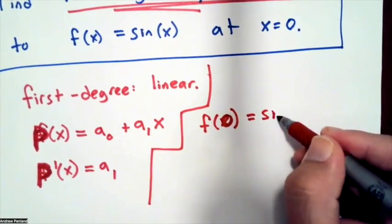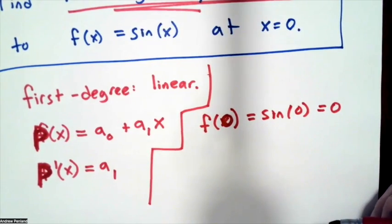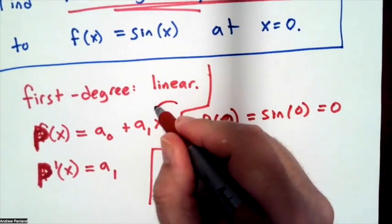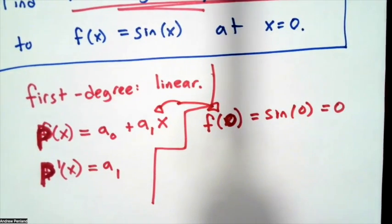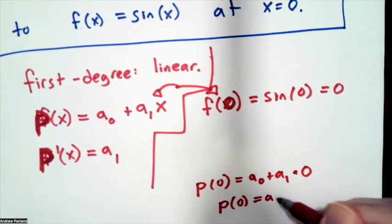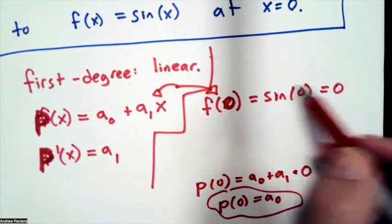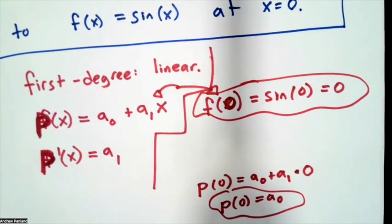Now remember, the whole point is that this p needs to match up with f at x equals zero. So f of zero will be sine of zero, which is just zero, and that better match up with my p of zero. On the other hand, p of zero is going to be equal to a sub zero plus a sub one times zero, so p of zero is just going to be that a sub zero coefficient.